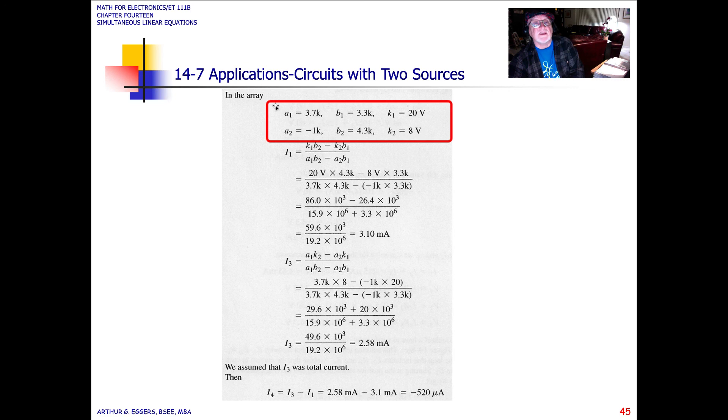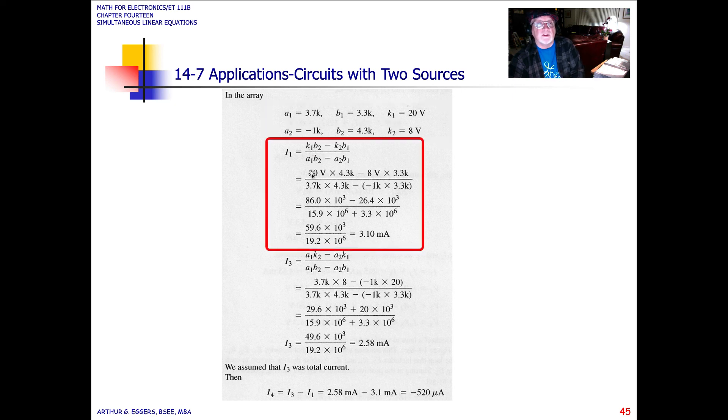Okay, so then in this case, they actually set up an array with their values. Again, they selected A1, A2, B1, B2, K1, K2, put them into the determinant forms for each of the currents.